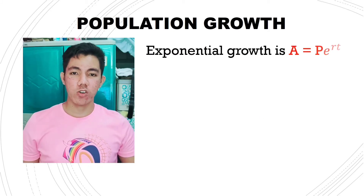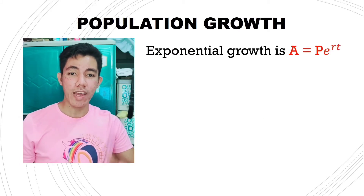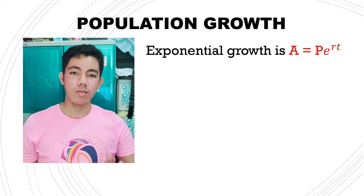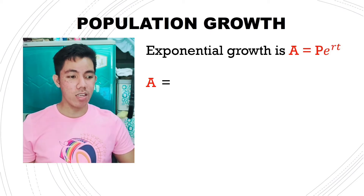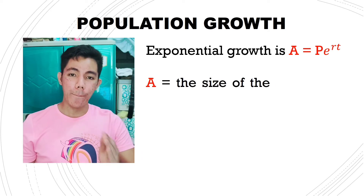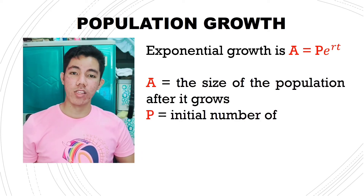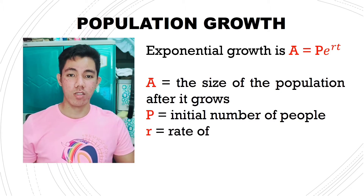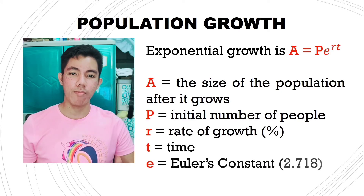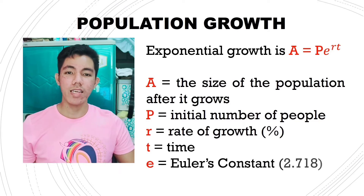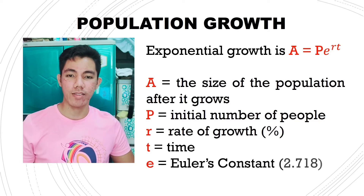In order to find the population growth, we have the exponential growth formula, which is A equals to P times e raised to rt. Where A is the size of the population, P is the initial number of people, r is the rate of growth or it is in percentage, t is the time — that could be day, month, or years — and e is Euler's constant which is equivalent to 2.718.